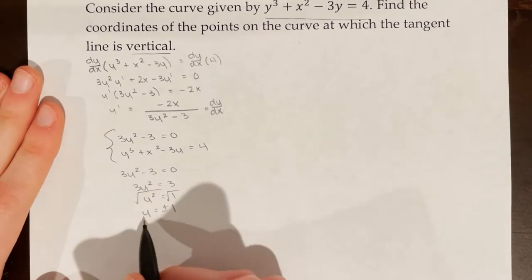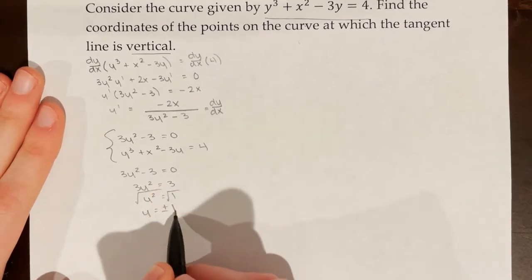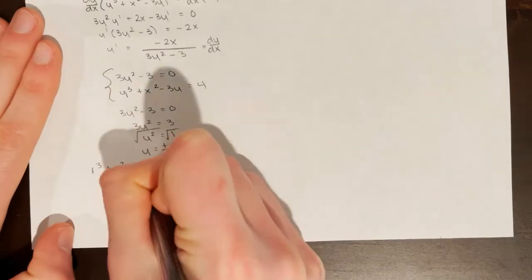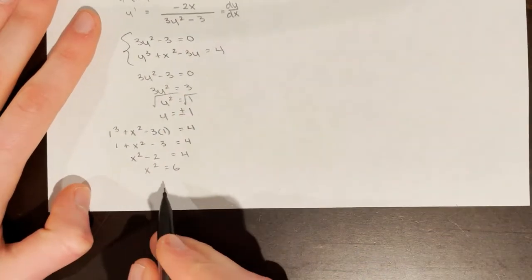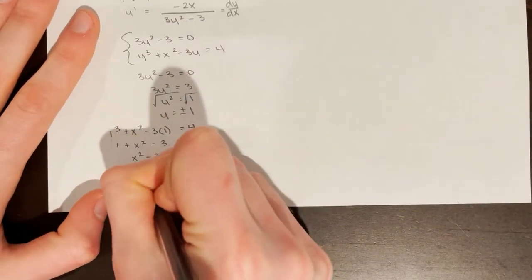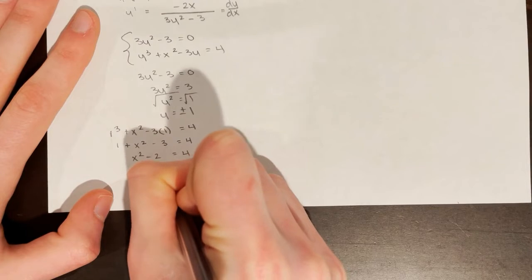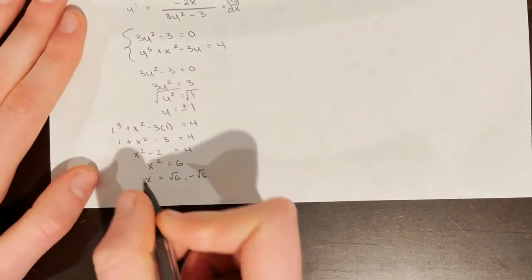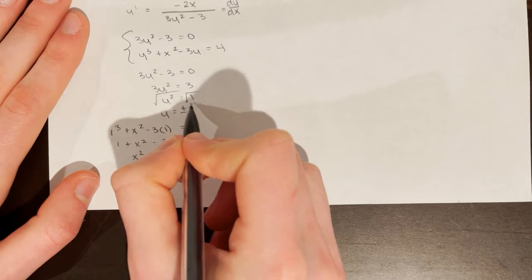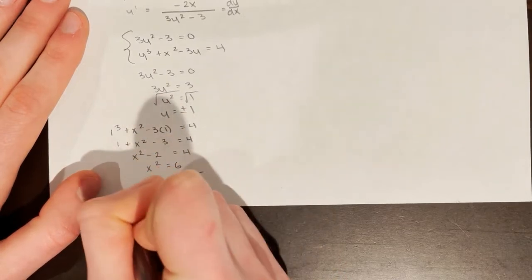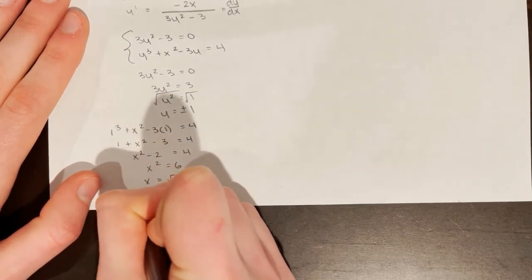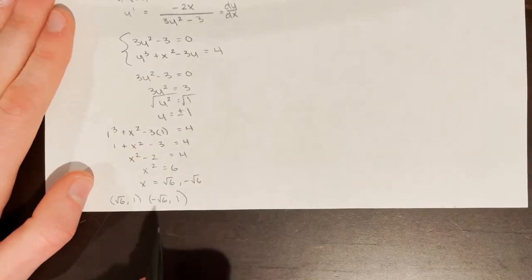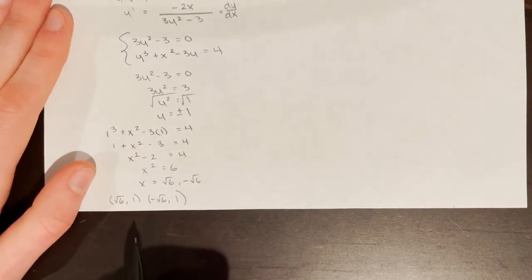To find the x-coordinates, I plug positive 1 into the second equation and get x² = 6. So x can equal positive or negative √6. Two of my potential coordinates are (√6, 1) and (-√6, 1), which I'll verify later.